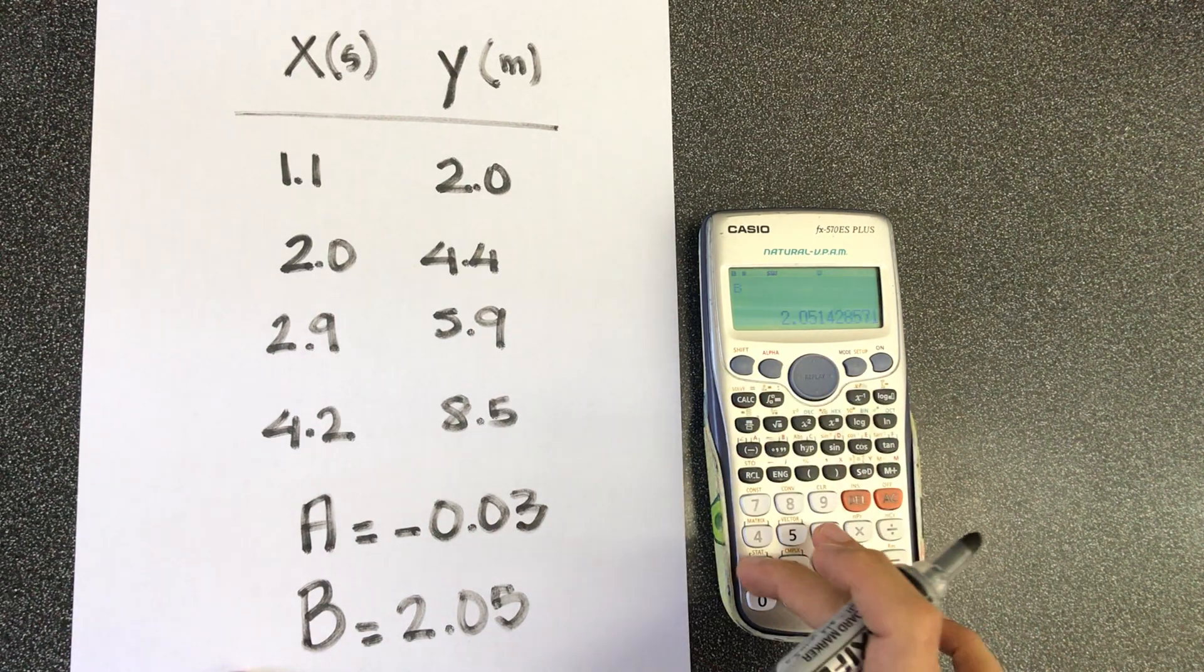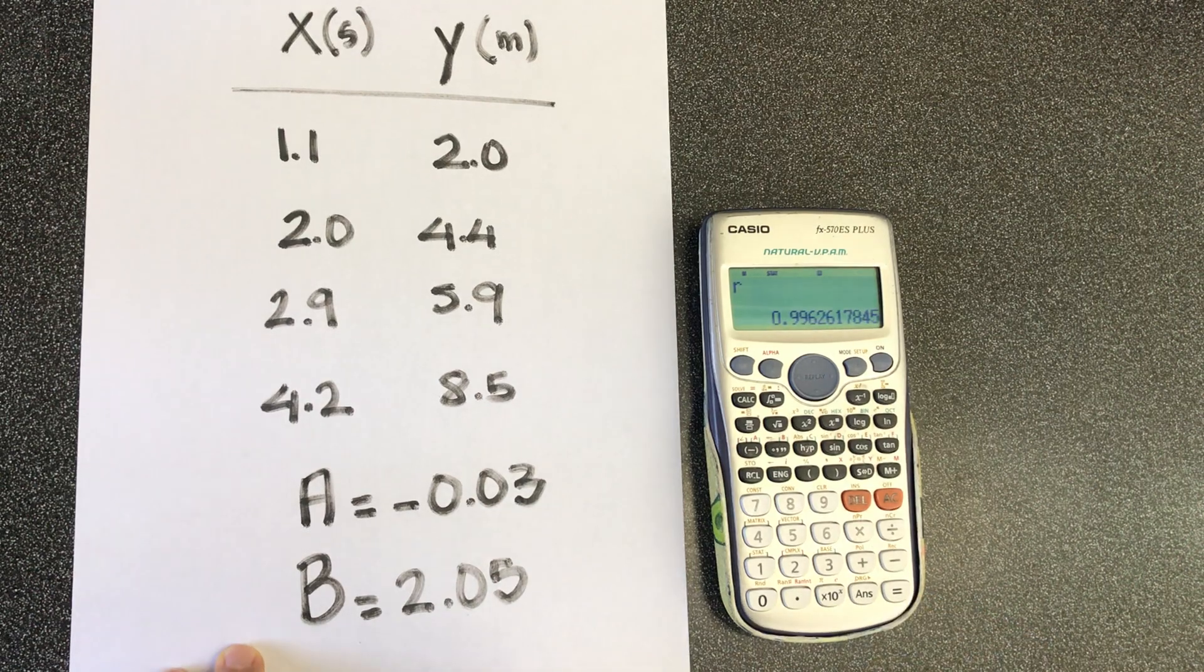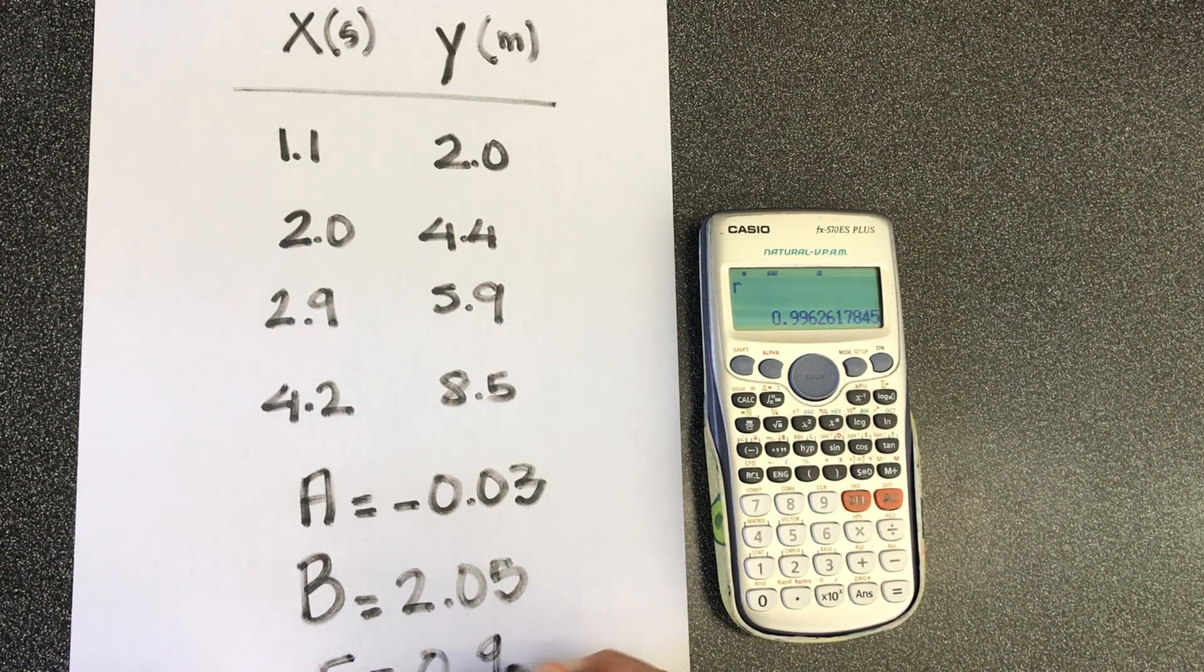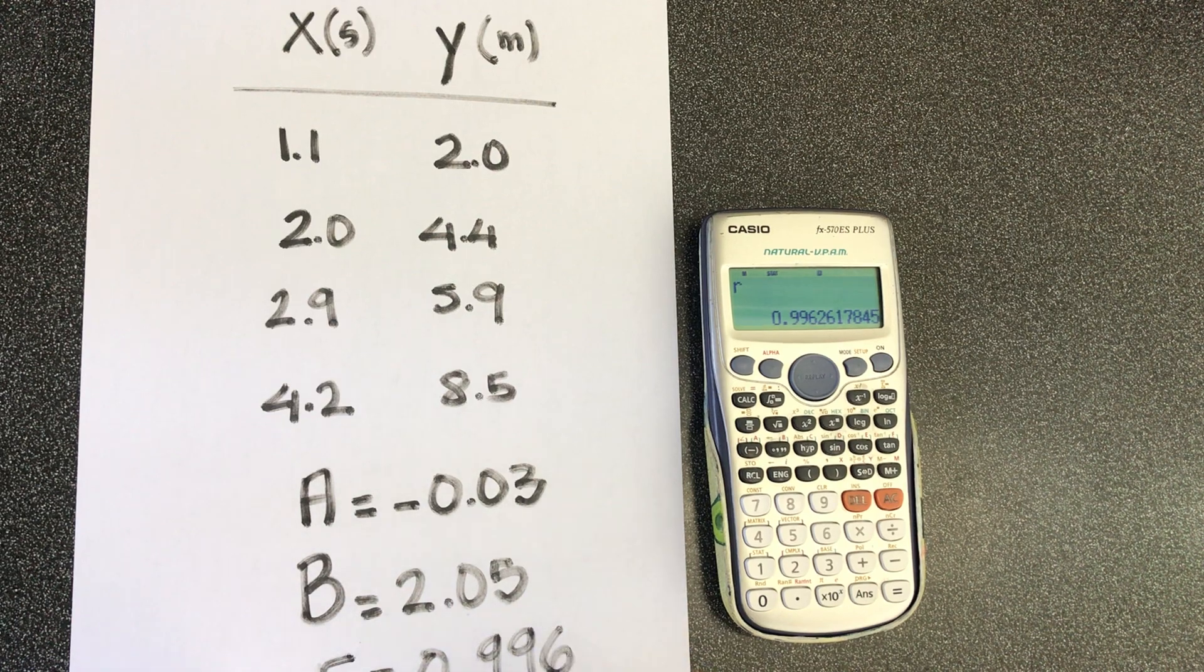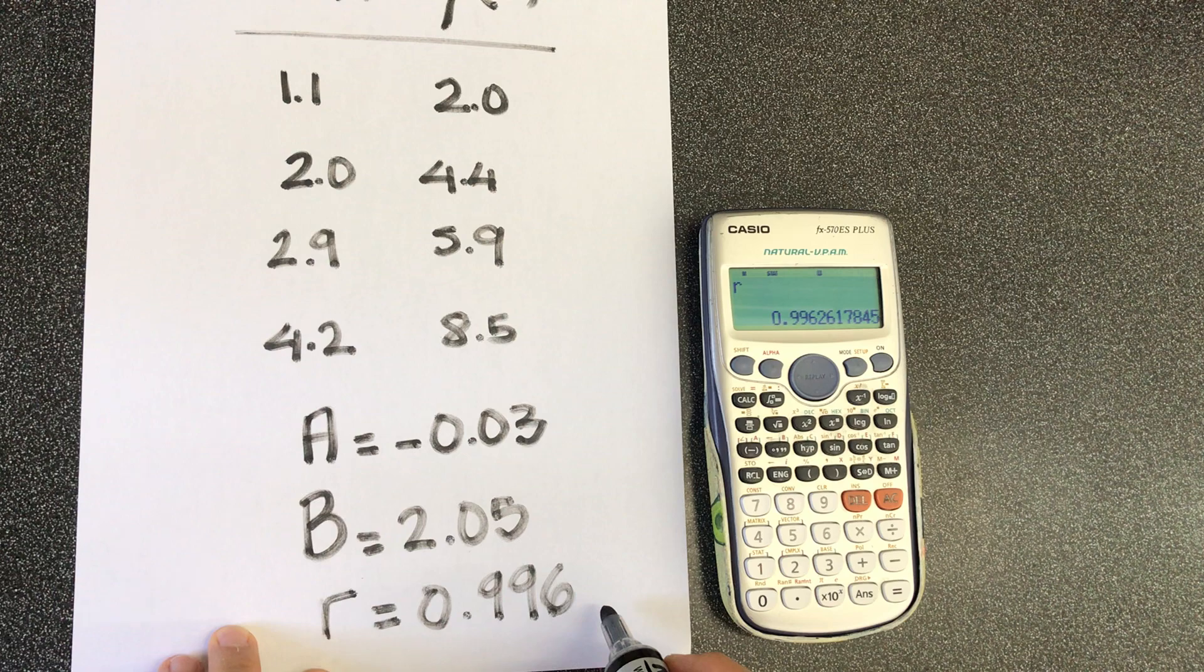And then shift 1, regression again. R is the coefficient of regression. And I'm going to explain again what it means. So, 0.996. By the way, this guy, R, has no units. It's a coefficient. It has no units.